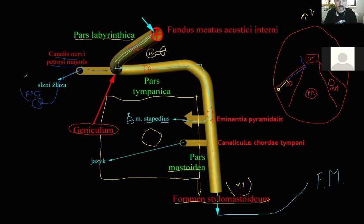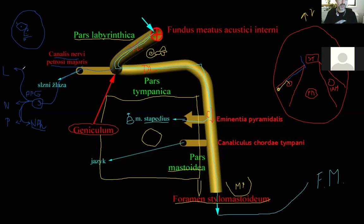From the pterygopalatine ganglion, four groups of glands are supplied: the lacrimal gland in the eye, nasal glands in the nasal cavity, palatine glands in the oral cavity, and nasopharyngeal glands. So it keeps all these mucosae moist.